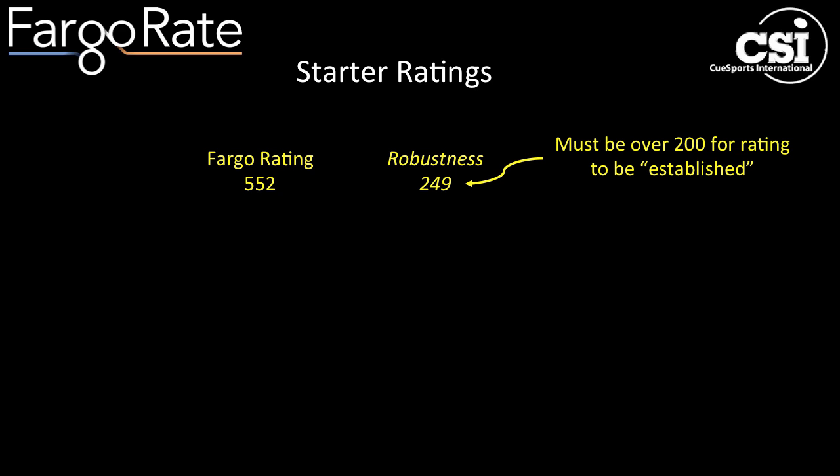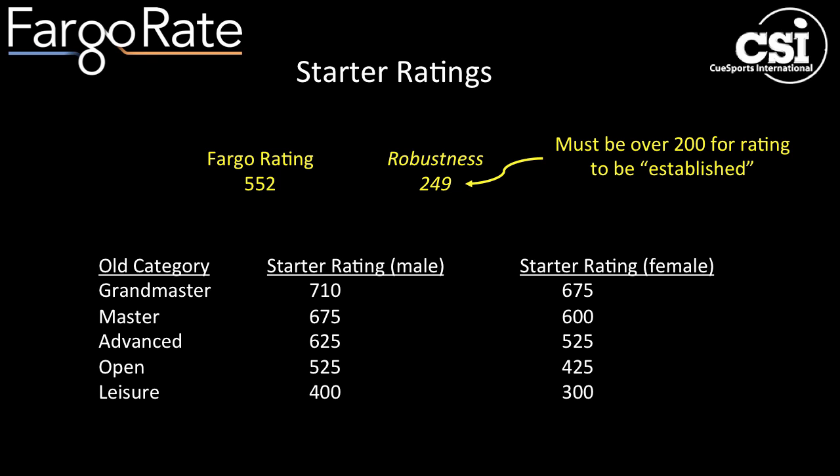Fargo Ratings come along with a second number called the robustness — right now, that's just the number of games the rating is based upon. The higher the robustness, the more established the rating, and we use 200 as the cutoff for considering a rating established. When a player comes to Nationals with fewer than 200 games in the system, there is some influence of a starter rating. For players with zero games, they play according to the starter rating entirely. For players with some games but fewer than 200, they play according to a weighted average of the starter rating and the emerging Fargo rating. By the time a player reaches 200 games, the influence of the starter rating has diminished to zero and is forgotten.